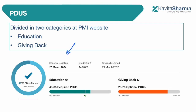The PDUs are divided into two things: education, which means you read and inculcate more knowledge, and giving back, wherein you are sharing knowledge. Sharing knowledge is optional — you can acquire a maximum of 25 PDUs. Education is a must; you need to have 35 required PDUs. The combination gives you 60 PDUs total, and then you can go ahead and renew your certification.